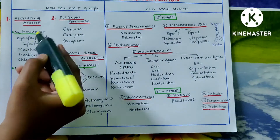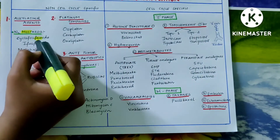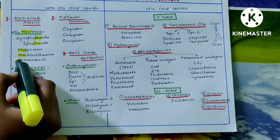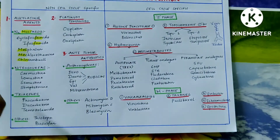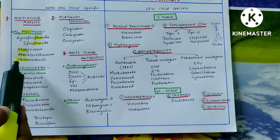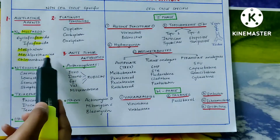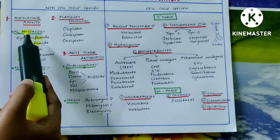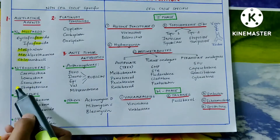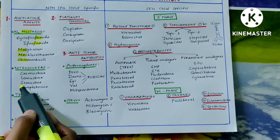Coming to nitrogen mustards — remember: family, mustard oil, meal-mech-chlor. The drugs are cyclophosphamide, ifosfamide, melphalan, mechlorethamine, and chlorambucil.